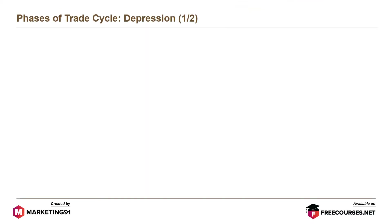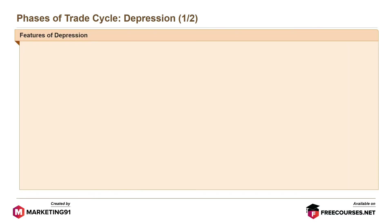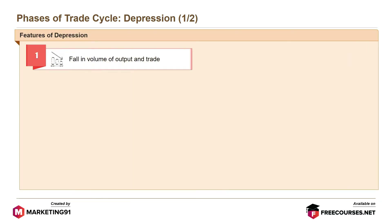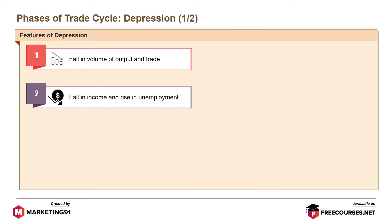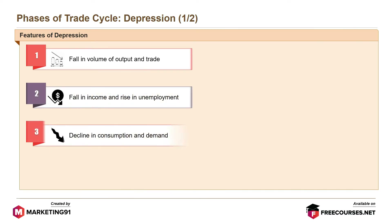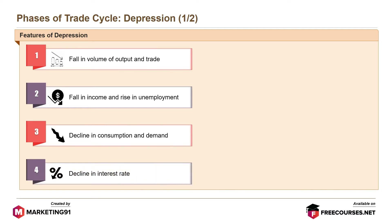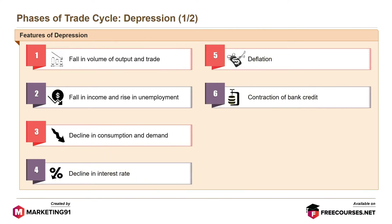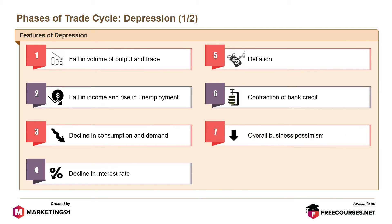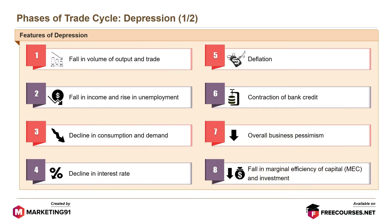The first phase is depression. Features of depression are: fall in volume of output and trade; fall in income and rise in unemployment; decline in consumption and demand; decline in interest rate; deflation; contraction of bank credit; overall business pessimism; and fall in marginal efficiency of capital (MEC) and investment.